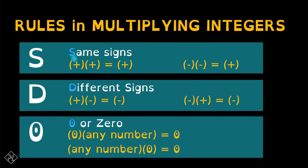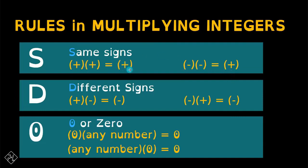S stands for same sign. When you multiply two numbers with the same sign, the product is positive. For example, a positive integer multiplied by another positive integer gives a positive integer. Same goes the other way — negative times negative, the product would also be positive. So, basically, same sign kapag pinag-multiply natin, that is positive. Tandaan natin yung first rule.